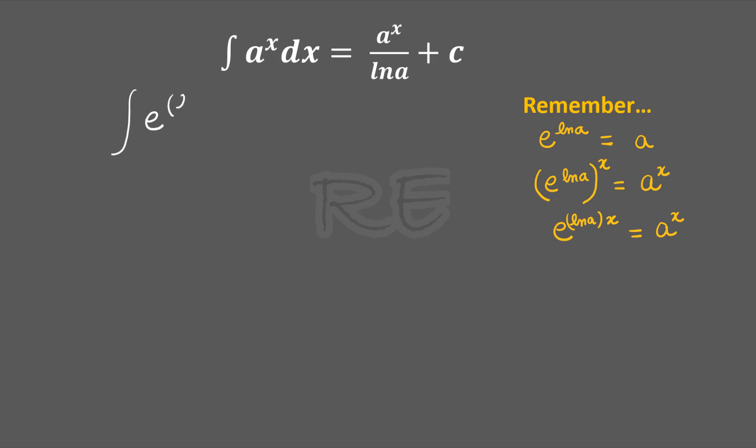We can replace a to the x by e to the ln a times x. The integral of e to the ln a times x dx. Now we are going to let u equal to ln a times x, and we know that the integral of e to the u du is equal to e to the u plus c.